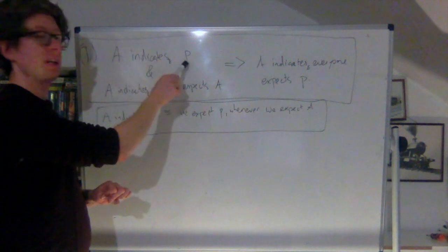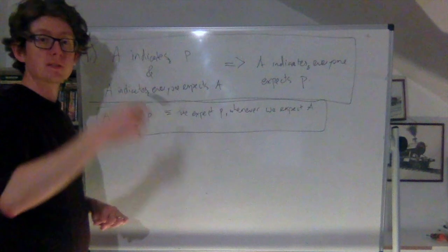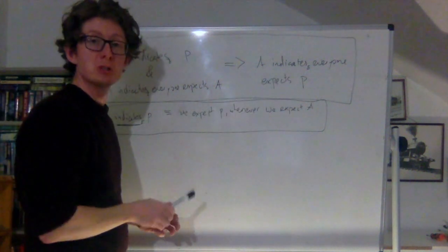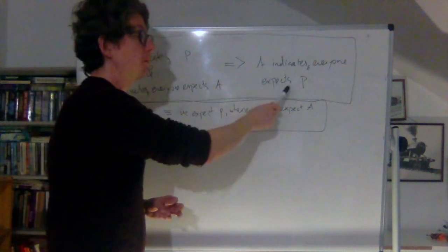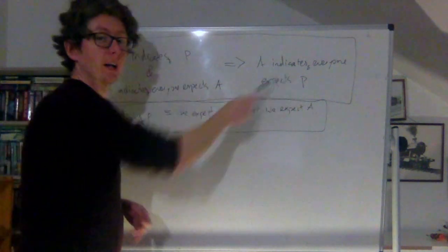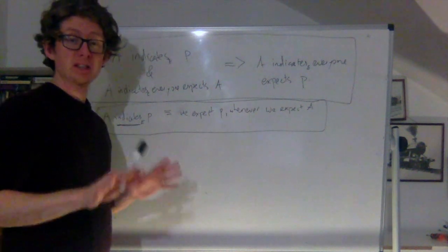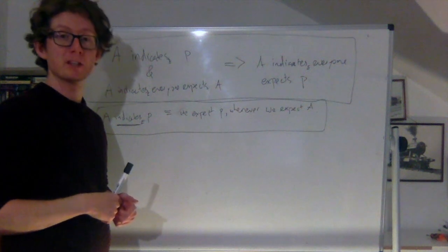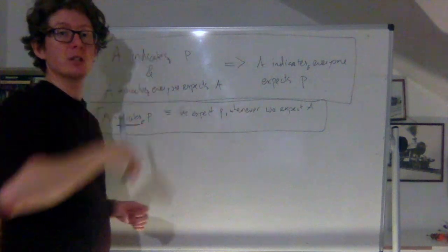So if some situation indicates a particular proposition, and the situation indicates of itself that everybody expects it to obtain, then it indicates that p is mutually expected. That gives you a way of turning indication about p into indication about mutual expectations of p, or put differently, gives you a way of going from a lower order to a higher order of expectation. And that's exactly the fact that's going to be crucial when we try to show why common expectation gives you expectation at every level.